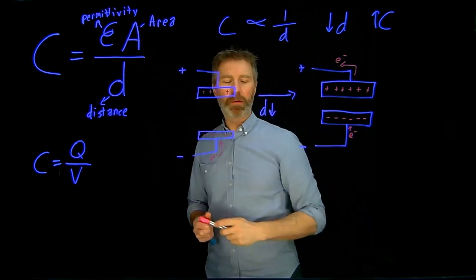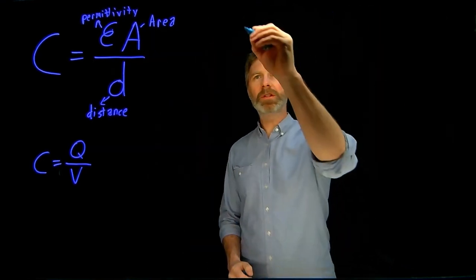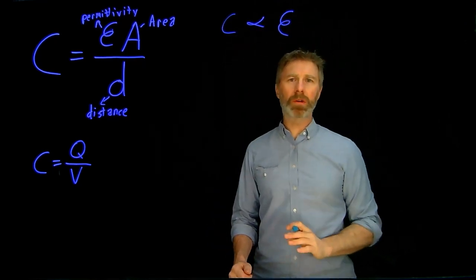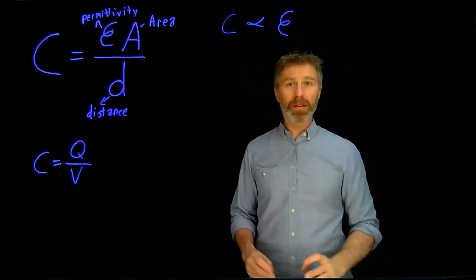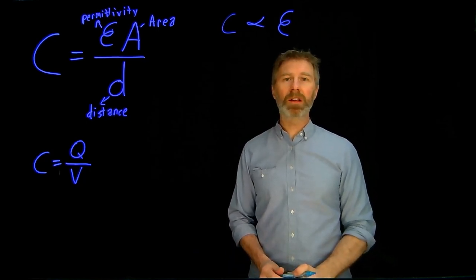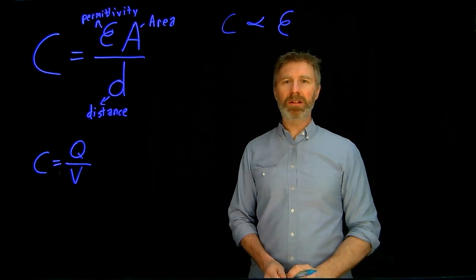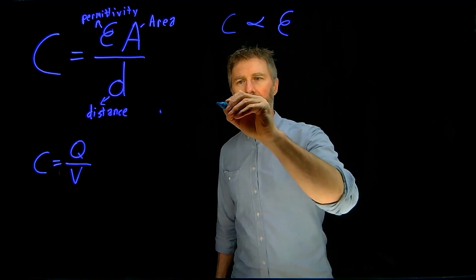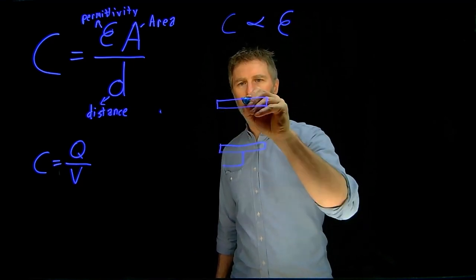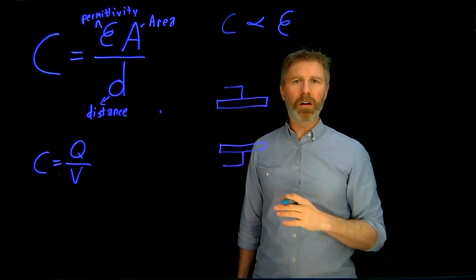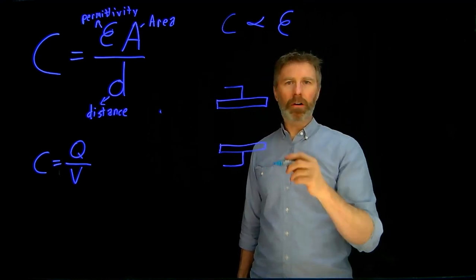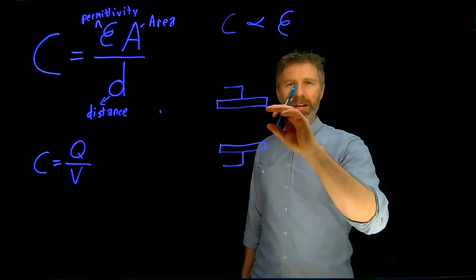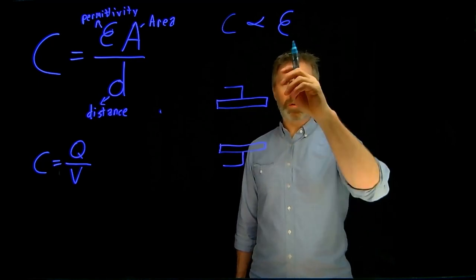Now finally let's take a look at permittivity. Capacitance is proportional to permittivity, so as permittivity goes up, so does capacitance. To understand why this is the case, we really need to understand what permittivity is. Really all permittivity is, is the capability to be polarized. In between these parallel plates needs to be some kind of insulator — we don't want any charge flowing across the plates. So the nature of that insulator is what determines the permittivity.